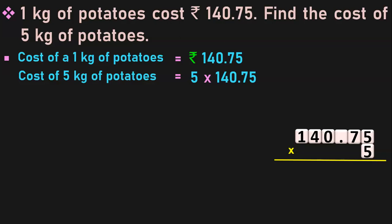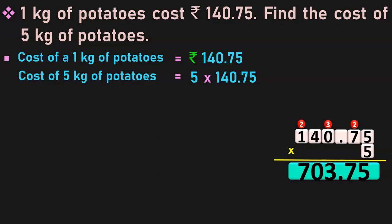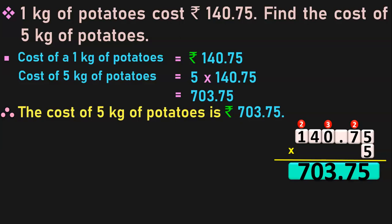Begin multiplication from the 1's place: 5 into 5 is 25; 5, carry over 2. 5 sevens are 35; 35 plus 2 is 37. Place the decimal point; 7 and 3 carried over. 5 into 0 is 0; 0 plus 3 is 3. 5 fours are 20; 0, carry over 2. 5 ones are 5; 5 plus 2 is 7. The answer is 703.75. Therefore the cost of 5 kg of potatoes is rupees 703.75.